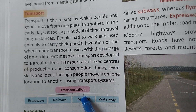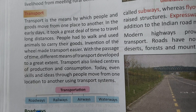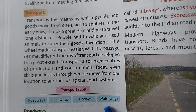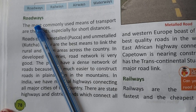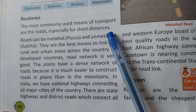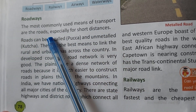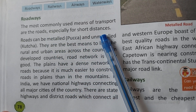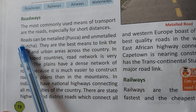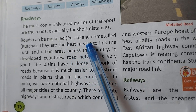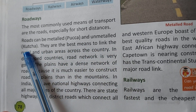Transportation includes Roadways, Railways, Airways, and Waterways. The most commonly used means of transport are roads, especially for short distances. Roads can be metalled (pakka) and unmetalled (kaccha).